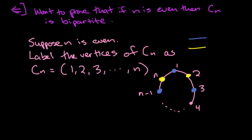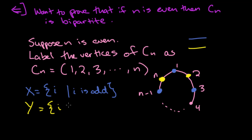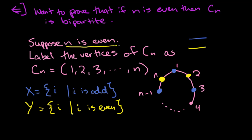If you look at the coloring being formed, we start with color blue on vertex 1, which is an odd vertex. So we've defined X as the set of vertices i such that i is odd — colored blue — and Y as the set of vertices i such that i is even. We alternate blue, yellow, blue, yellow, and we end with yellow landing on an even vertex. Since n is even, vertex n belongs to the set Y.